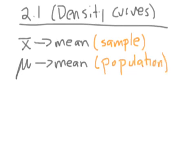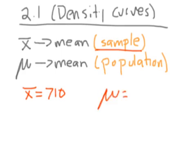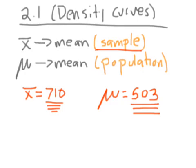Let me give a quick example using SAT scores. If I asked 15 Sacred Heart students their SAT score and calculated the mean, I took a sample — so x-bar might be 710. But if I talk about the mean SAT score nationwide for the entire population, you'd say mu is like 503. That number refers to a population, basically everybody, while x-bar refers to a specific sample.